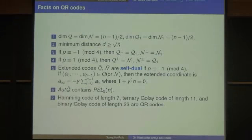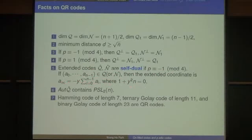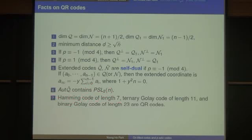There are many nice properties of quadratic residue codes. I am especially interested in the extended codes Q-hat and N-hat, which are self-dual when p is congruent to minus 1 mod 4. The extension is not always by a simple check digit — there is a little twist. These extended codes are important because the automorphism group is very large, containing PSL(2,N). Important codes like the Hamming code of length 7, binary code of length 11, and binary code of length 23 are all quadratic residue codes.